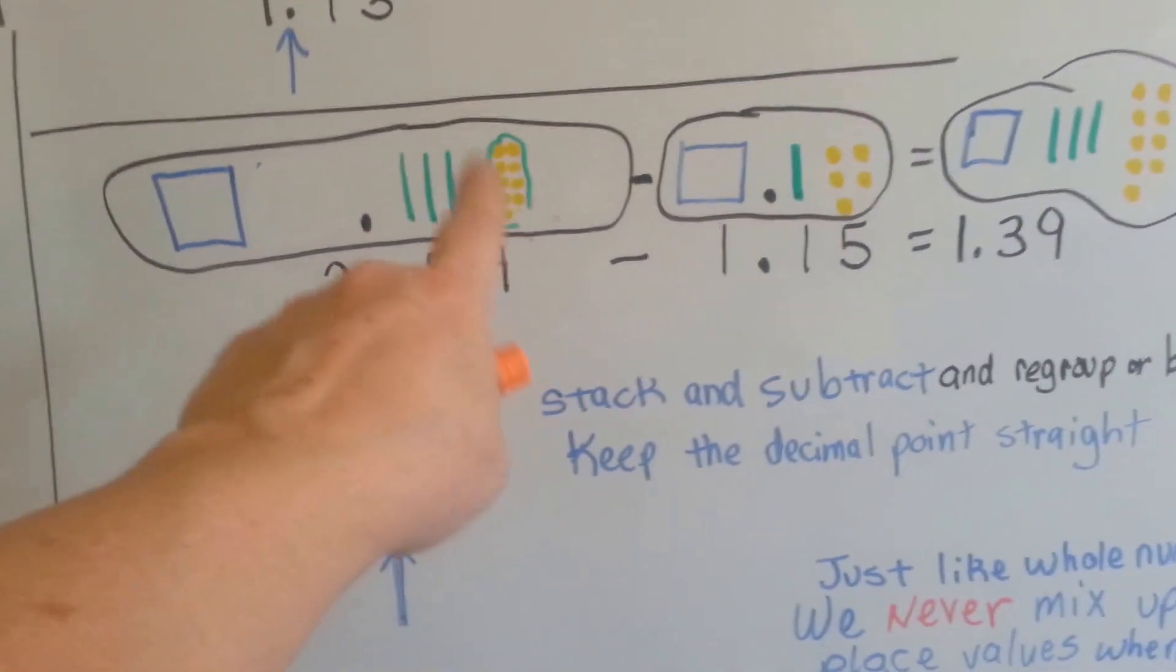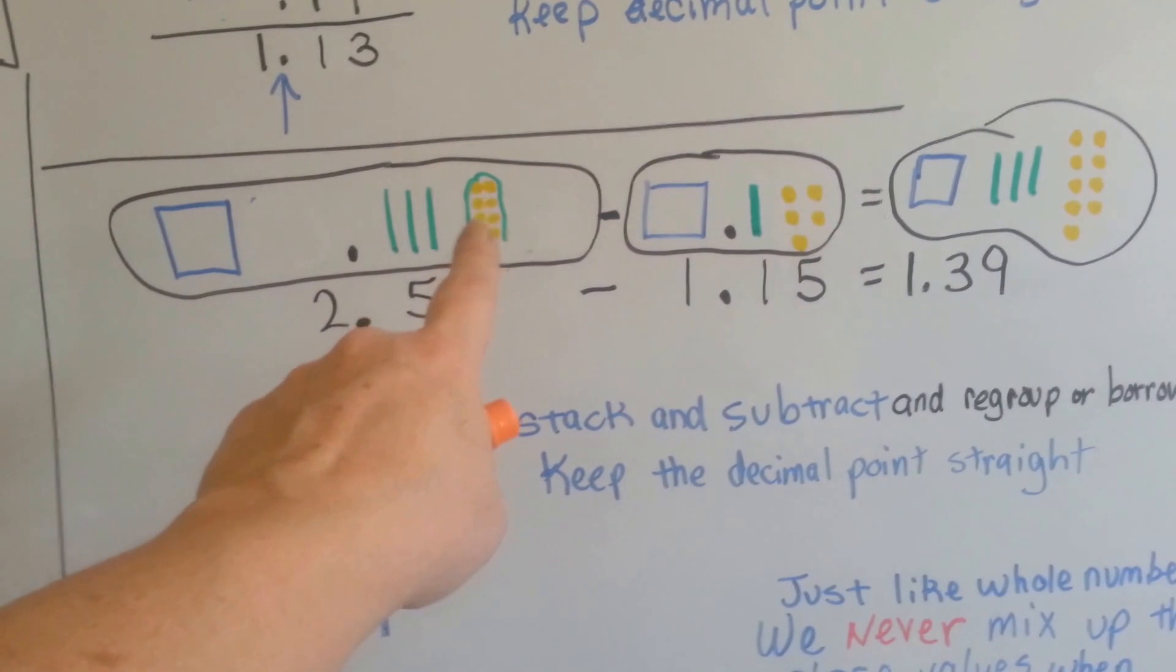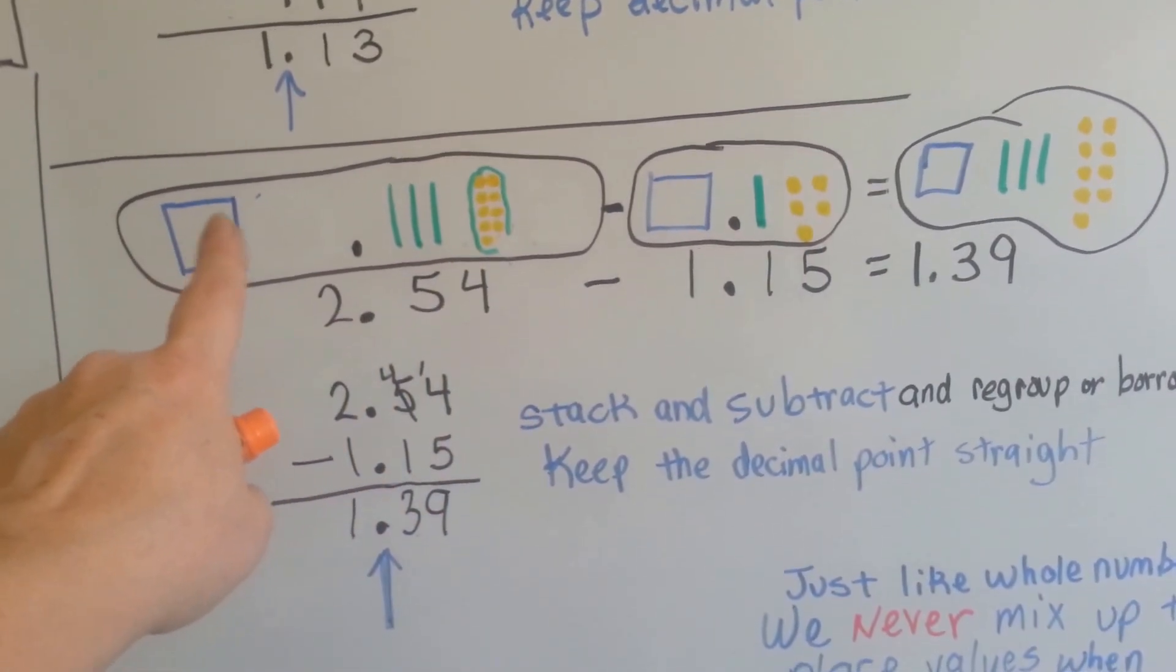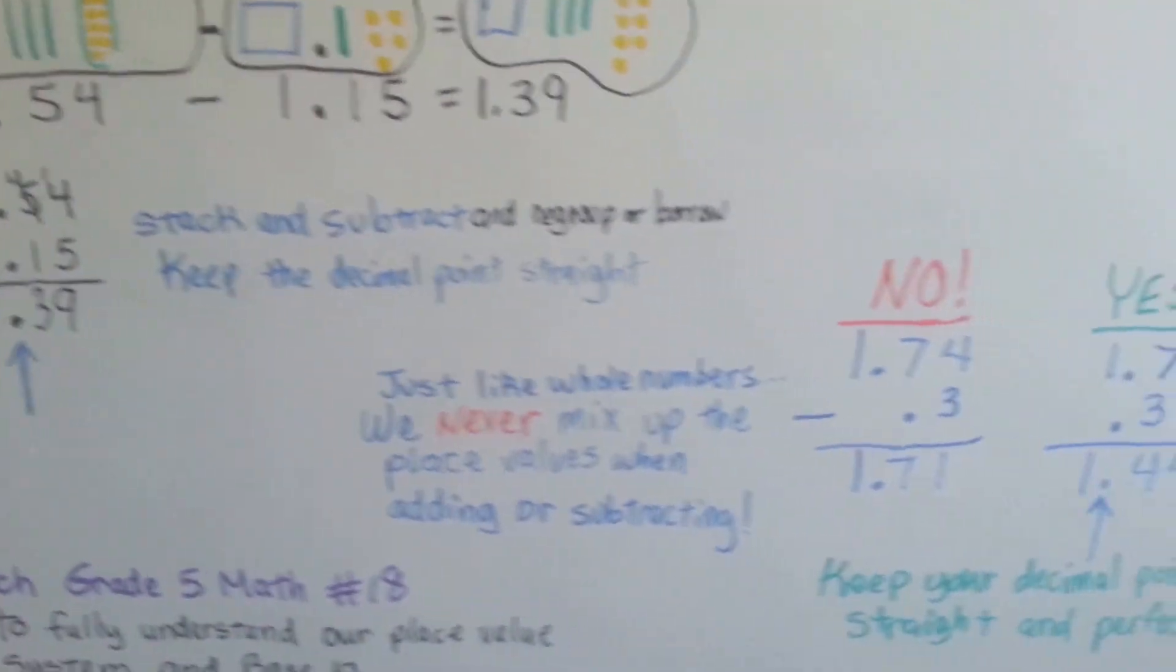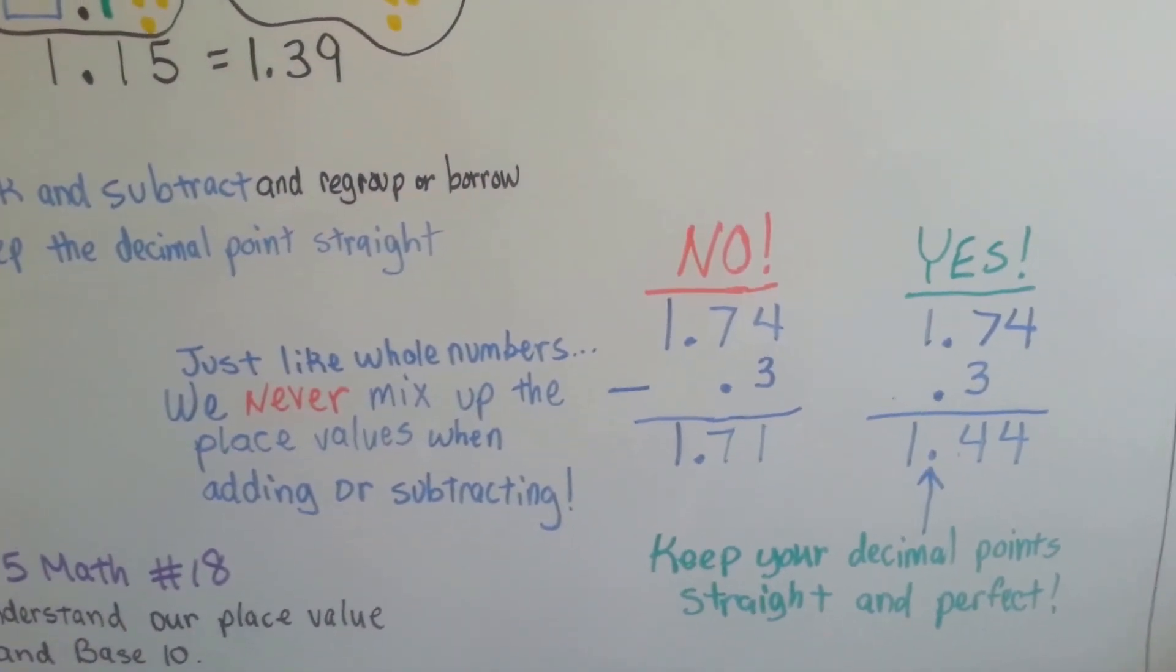So we can regroup by turning one of these full ones into ten little ones, or we could even break this up into ten green ones, couldn't we? So just like whole numbers, we never mix up the place values when we're adding or subtracting. Ever, ever.